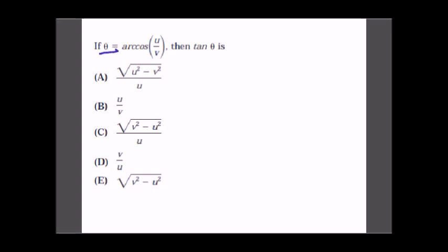The question is: if θ = cos⁻¹(u/v), find tan θ. We are given that cos⁻¹(u/v) = θ, which means cos θ = u/v. We know that cos θ = base over hypotenuse, so the base is u and the hypotenuse is v.